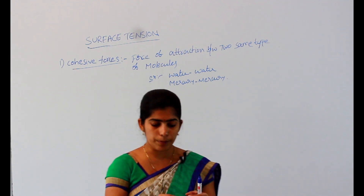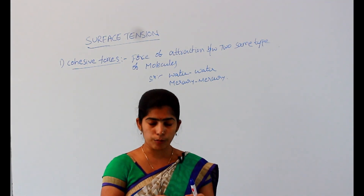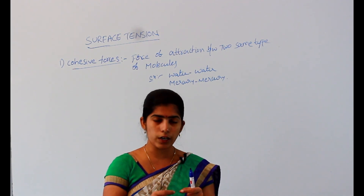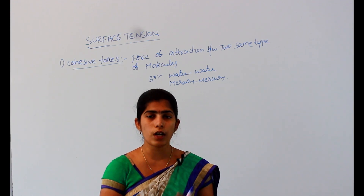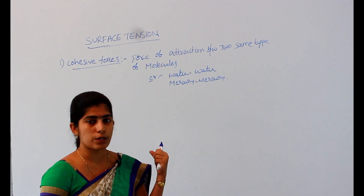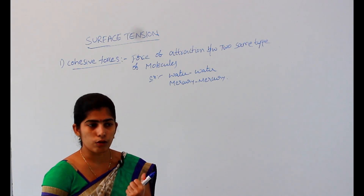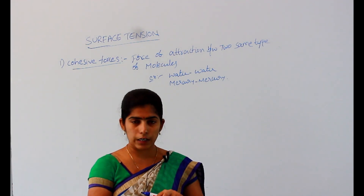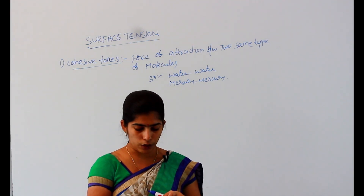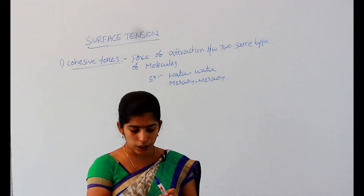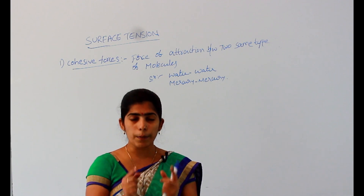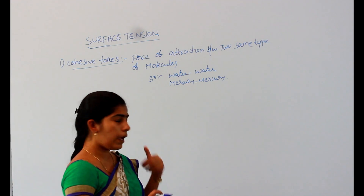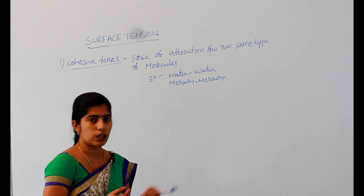For example, if one water molecule is here and another water molecule is here, whenever they come close together, they want to join and form a big water molecule. This is mainly due to the causal forces present between the two water molecules. Similarly, if we take any two mercury drops, whenever they come close together, they join and form a big mercury drop. This is also due to the causal forces between the two mercury molecules.